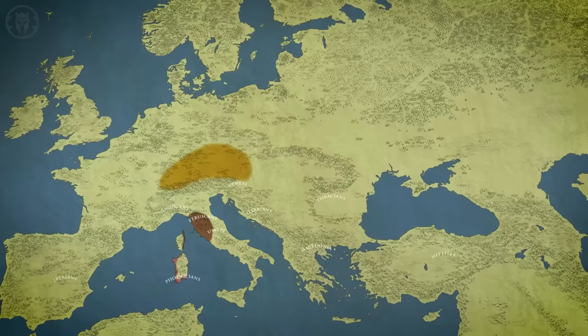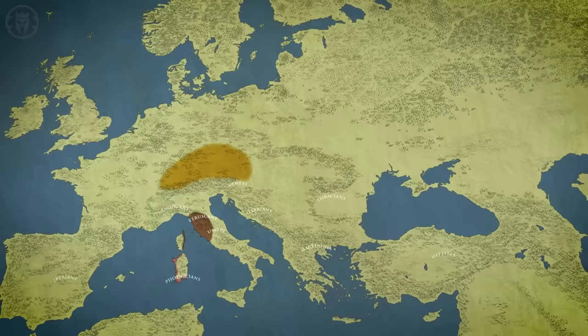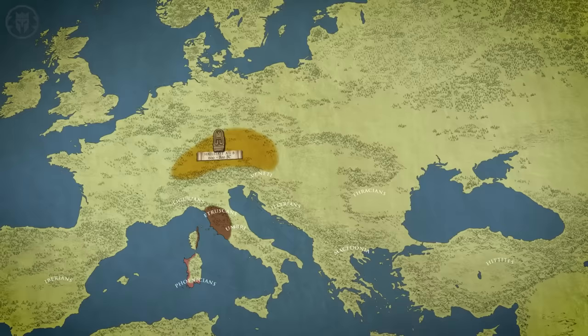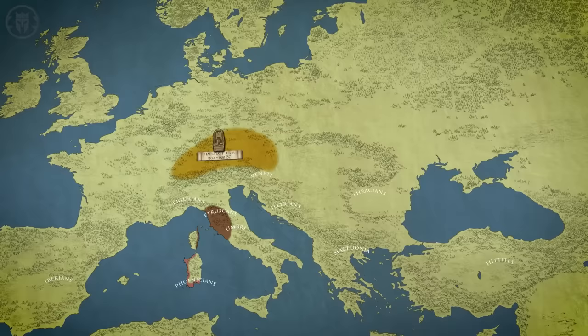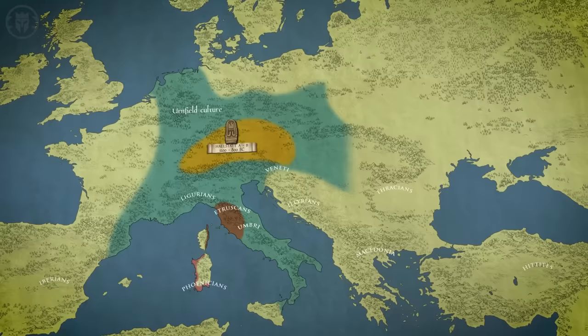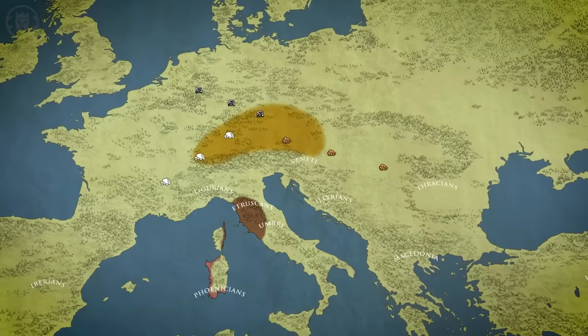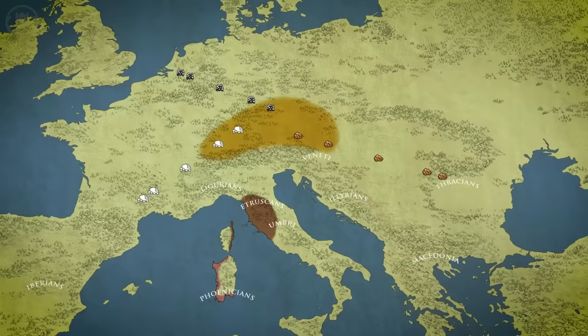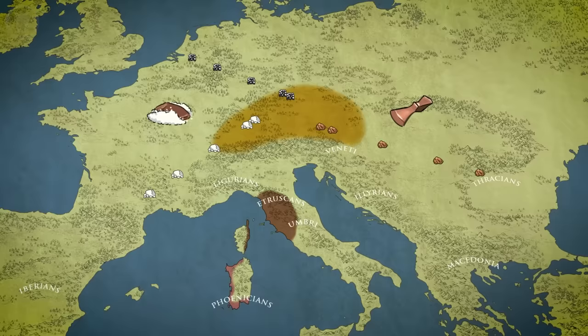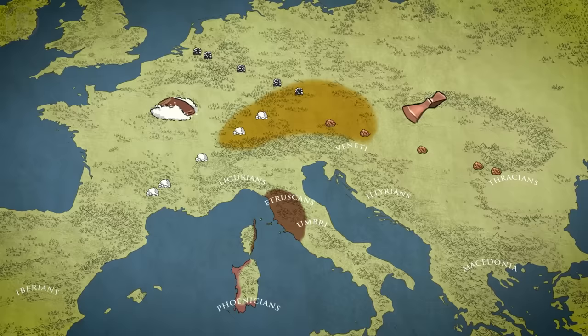Hallstatt A and B emerged in the Late Bronze Age between 1200 to 800 BC in Central Europe. It was initially a minor deviation of the Indo-European Urnfield complex, an older material culture prominent across much of Central Europe. Hallstatt society was based on mining salt, copper and tin, and trading them to outlying regions. These were crucial products, for salt was used to preserve meat in winters, while copper and tin were used to forge bronze, the most precious metal of the era. The peoples of the Hallstatt heartland grew prosperous from this trade, which remained a core part of their economy for centuries to come.